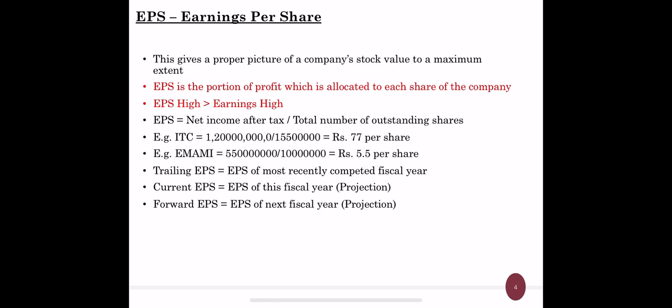To find out earnings per share, we use the formula: net income after tax divided by total number of outstanding shares. For example, looking at ITC and Emami, the EPS of ITC is 77 per share and Emami is 5.5 per share. So ITC can be considered a market leader in this example because it has high EPS, which shows the earnings are also very high.